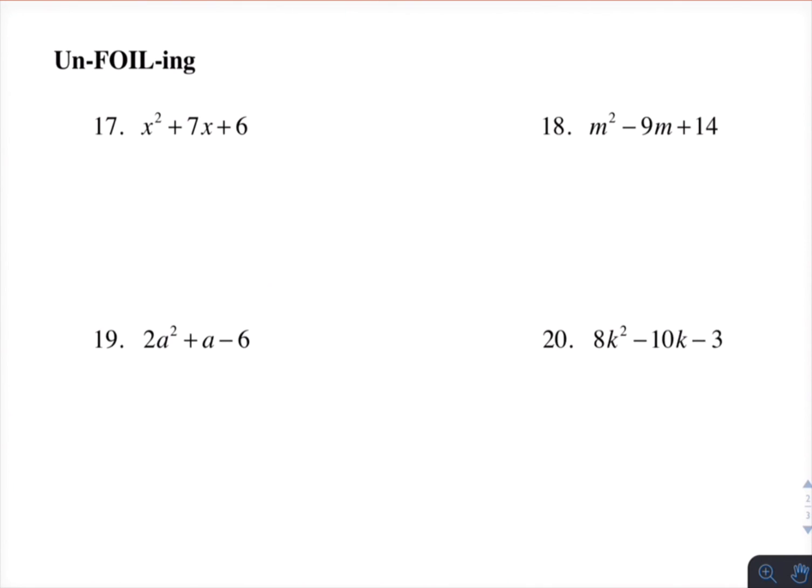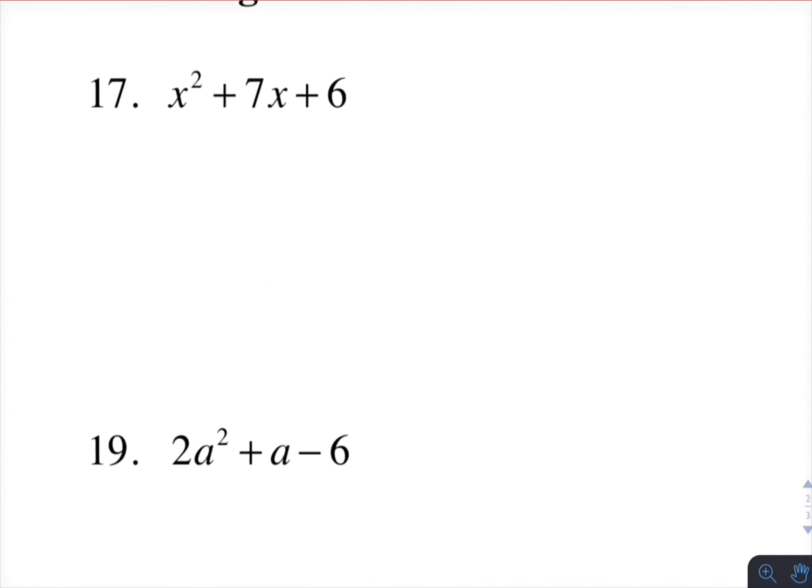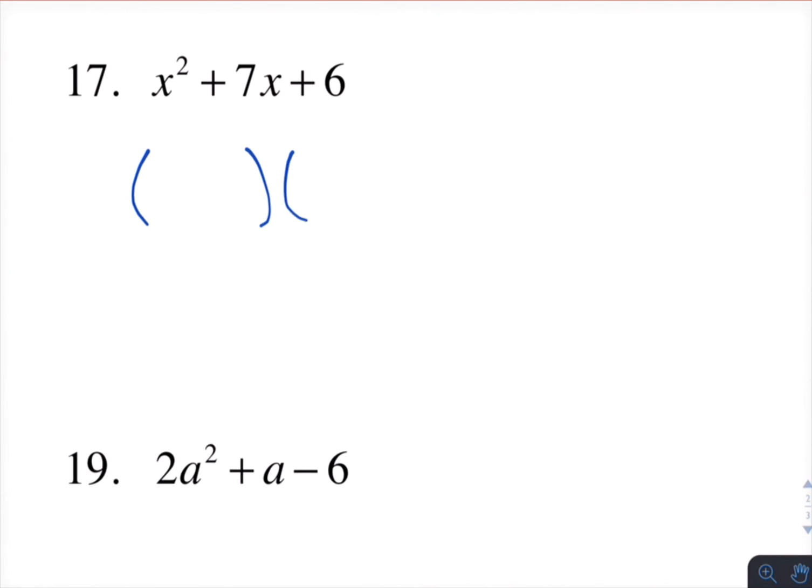And then unfoiling or reverse foiling. There's a couple different names for it. But these are done with trinomials. And we know that we want to factor it into two binomials. I know I need an x and an x here because that's how I get x squared. I know I need factors of 6. So my choices are 1 and 6 or 2 and 3. And we can see that the 1 and 6 is going to get me my middle term, my 7. So there you have it.